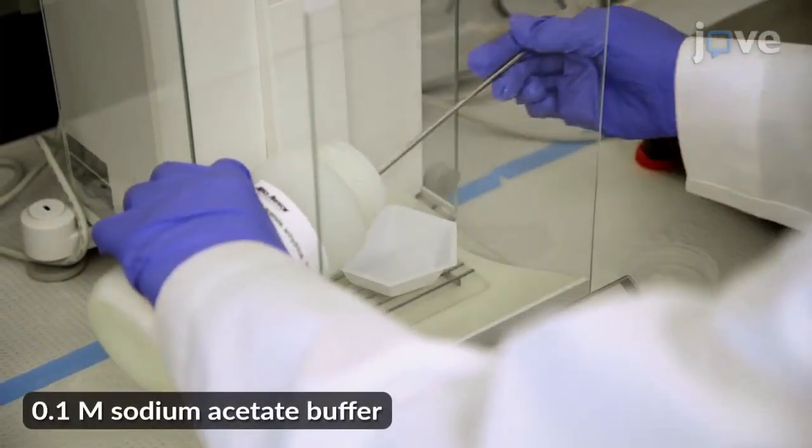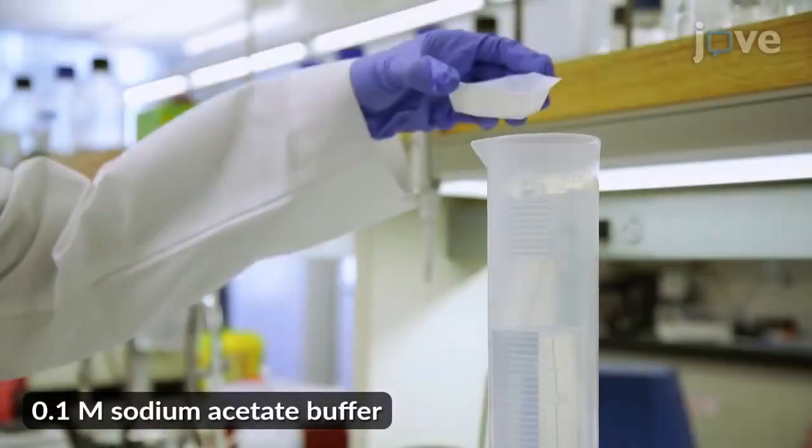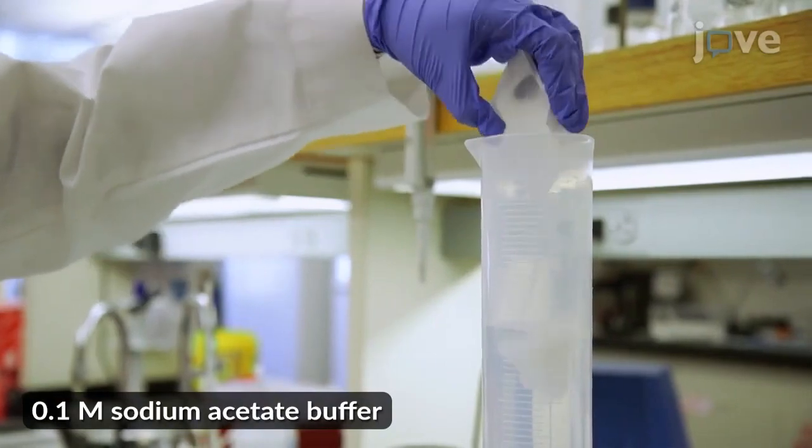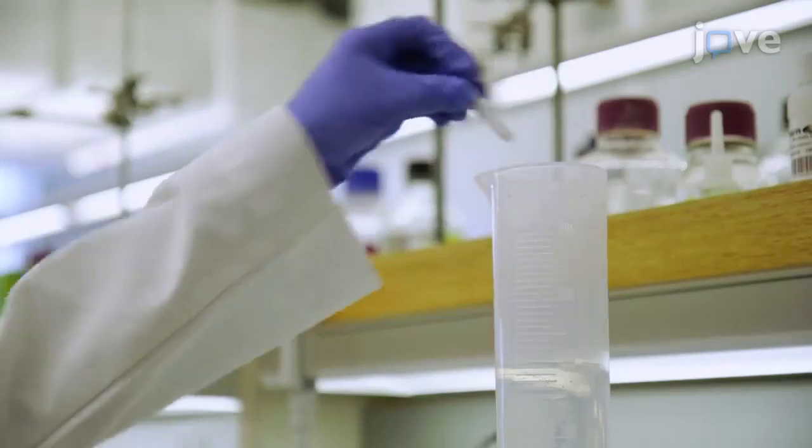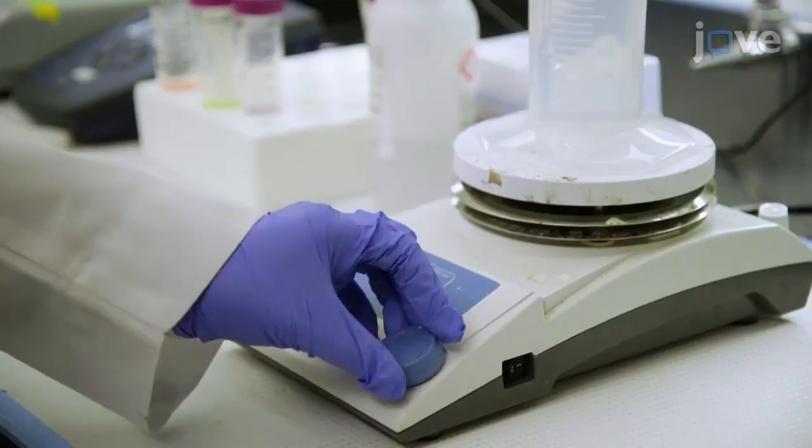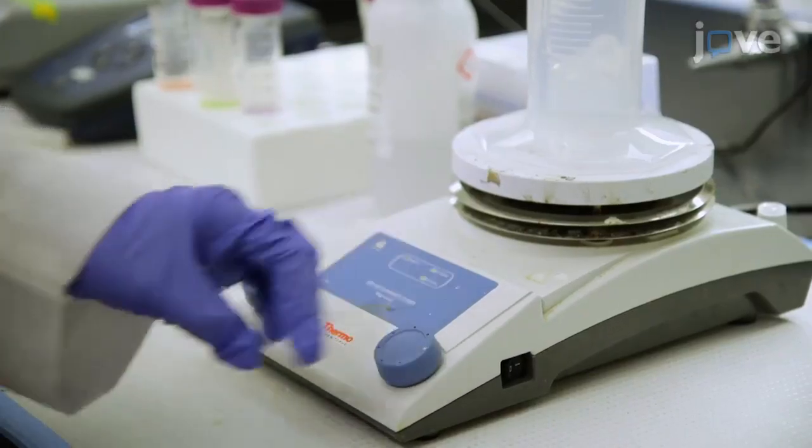Then weigh 8.2 grams of anhydrous sodium acetate and add it to the beaker. Place the beaker on a stir plate, place a stir rod into the beaker, and turn on the stir plate to stir until completely dissolved.